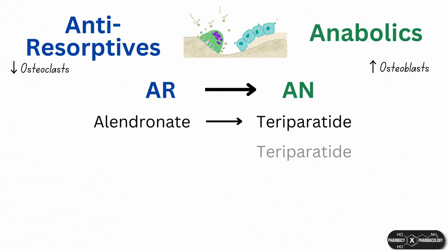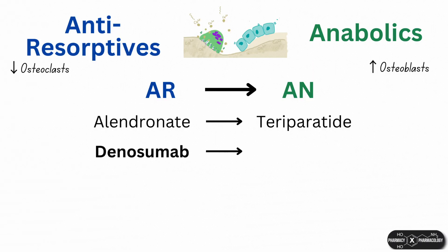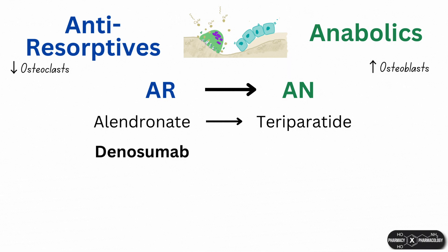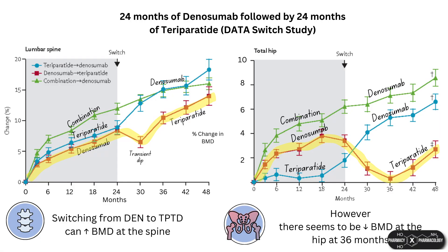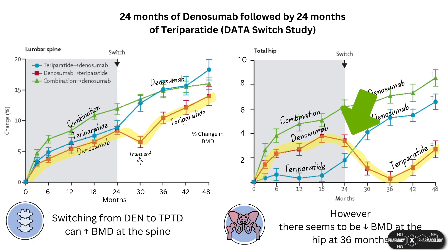What happens when transitioning from denosumab to teriparatide? Is teriparatide able to counteract the hyperresorption from denosumab discontinuation? The DATA-Switch study followed 23 post-menopausal women with osteoporosis who were on two years of denosumab and then switched to two further years of teriparatide. At the spine there were further increases in BMD; however, at the hip there was a dip in BMD at 36 months.